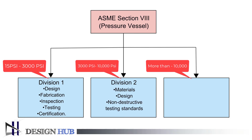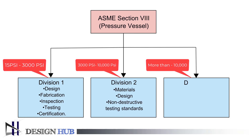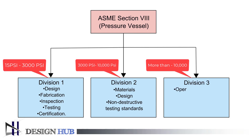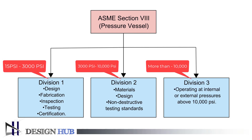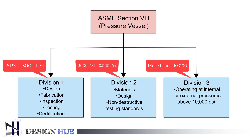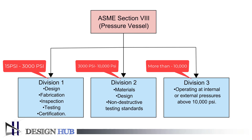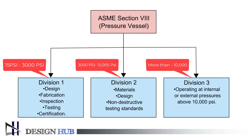Division 2 provides requirements on materials, design, and non-destructive examination standards. Division 3 provides guidelines for pressure vessels operating at internal or external pressures above 10,000 pounds per square inch.